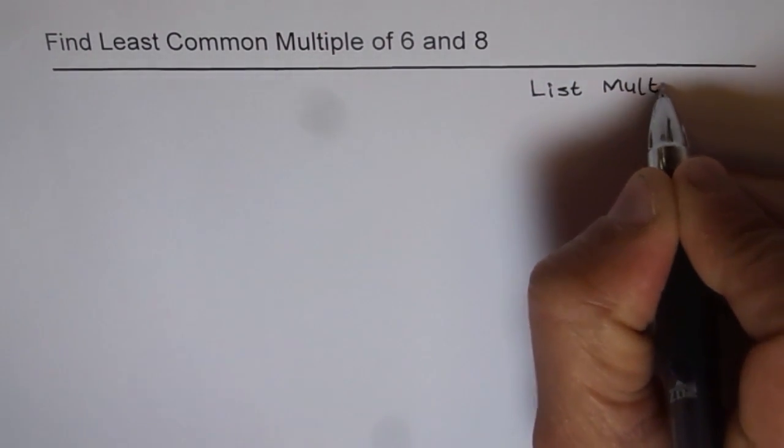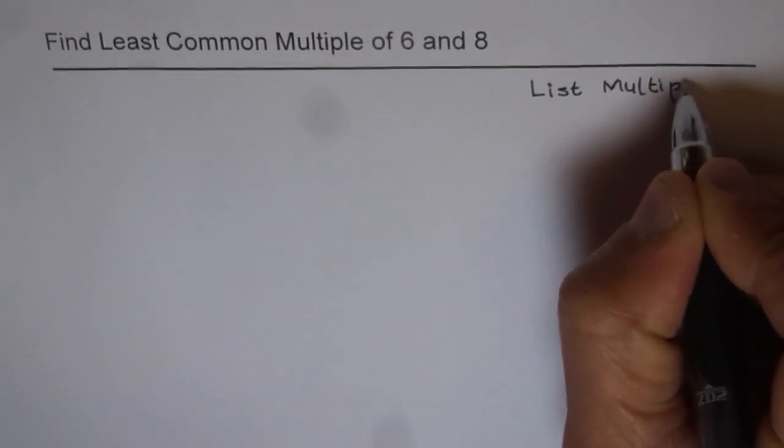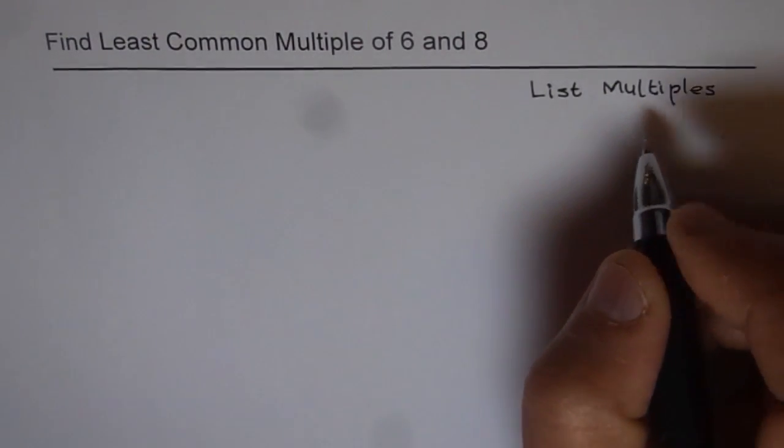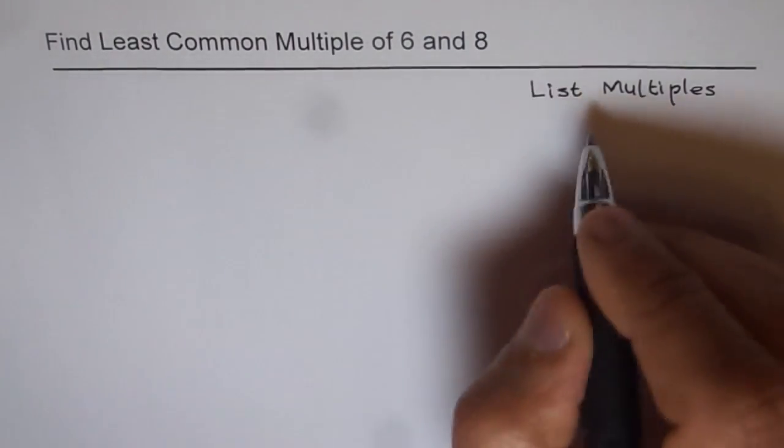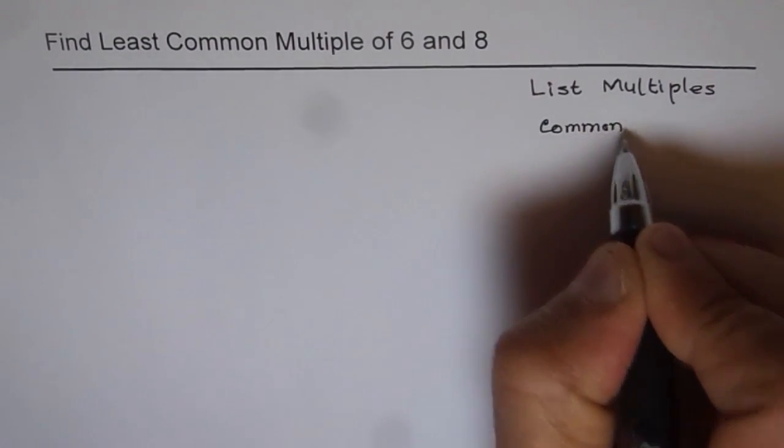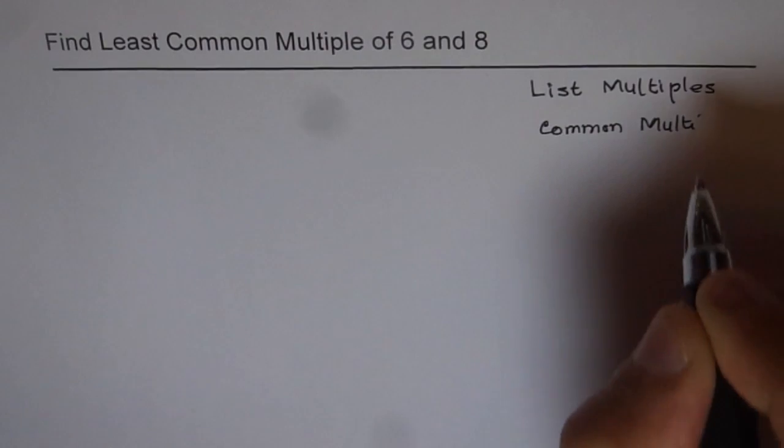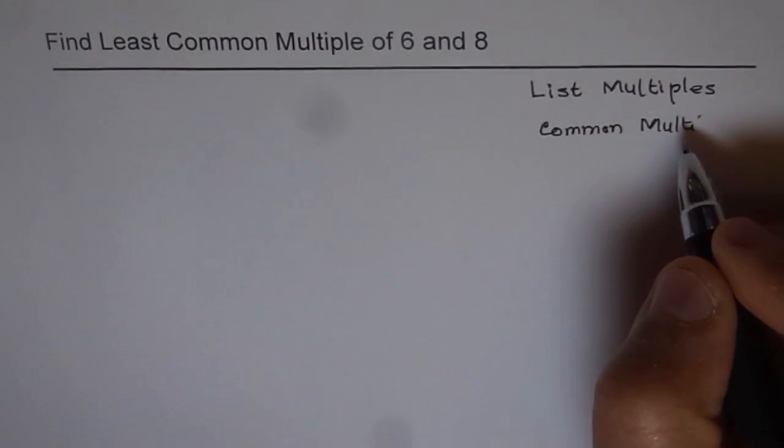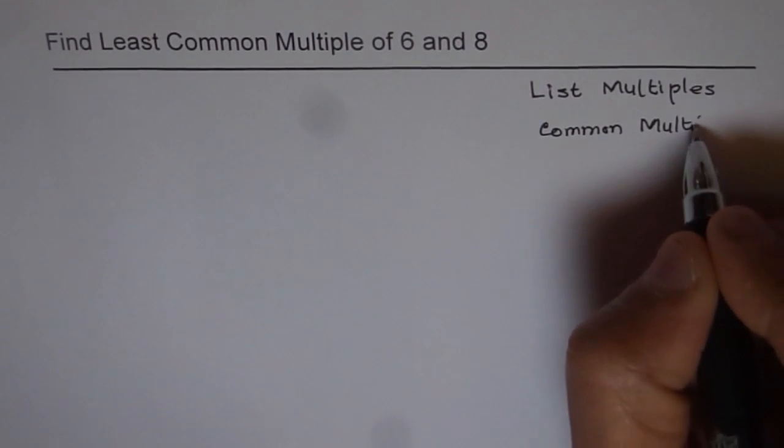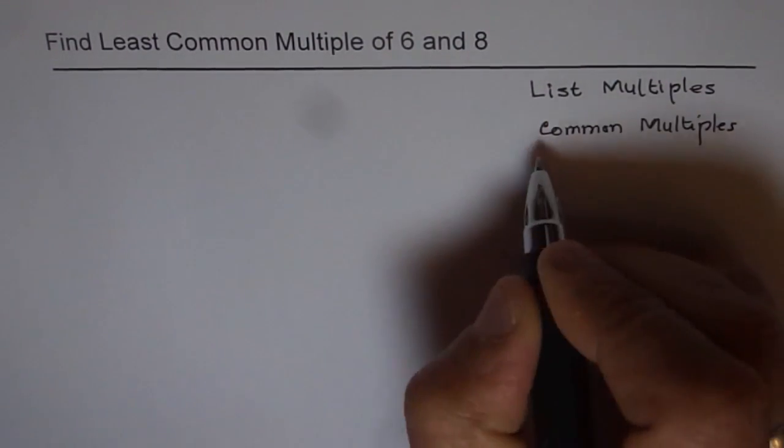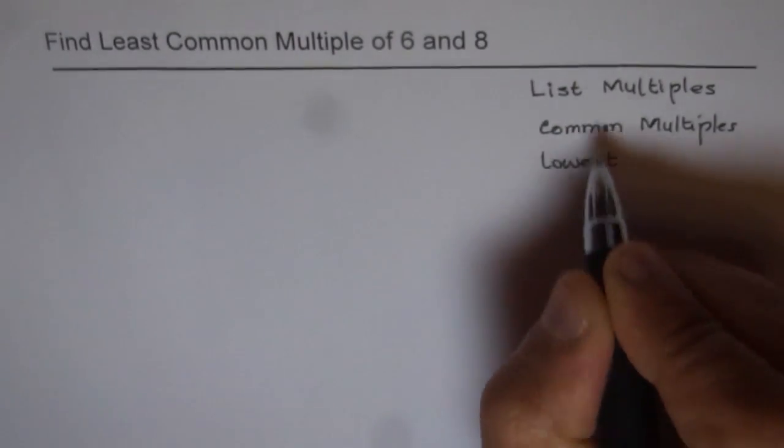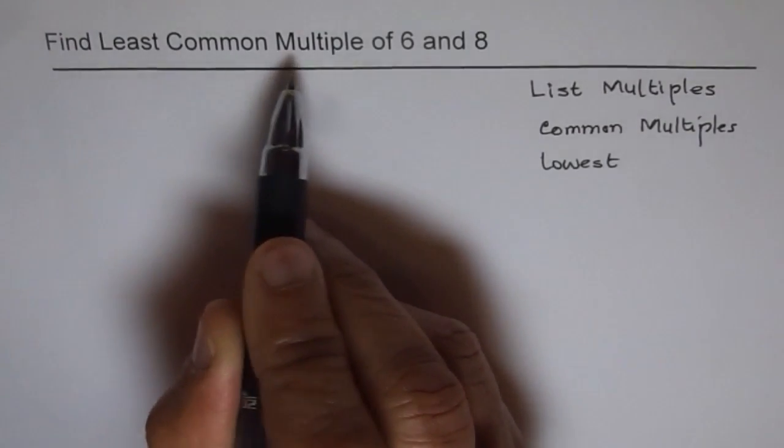So the method is first list all the multiples which you can. It could be a long list at times and then we'll find common among these multiples. So if there are two or more numbers, let's say there are three numbers, then you have to list multiples for all the three numbers. Then find common multiples.